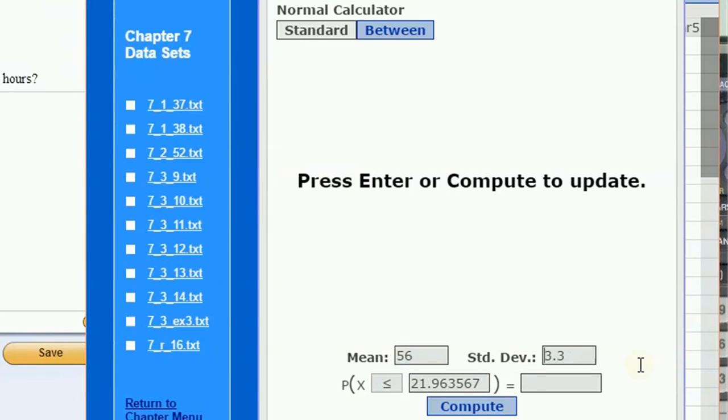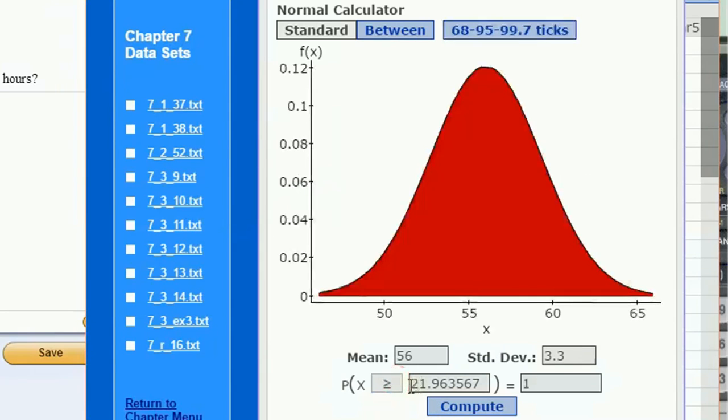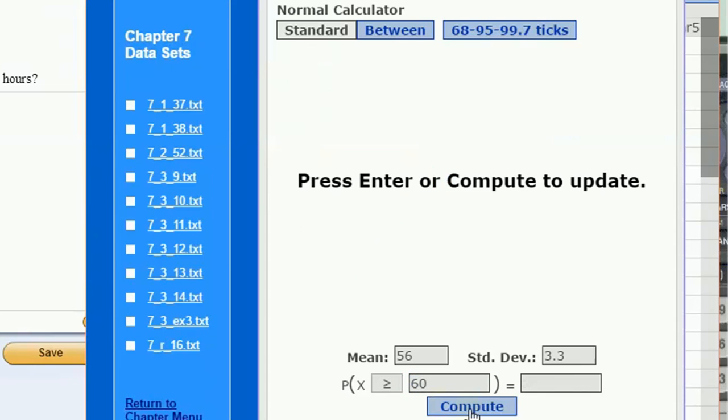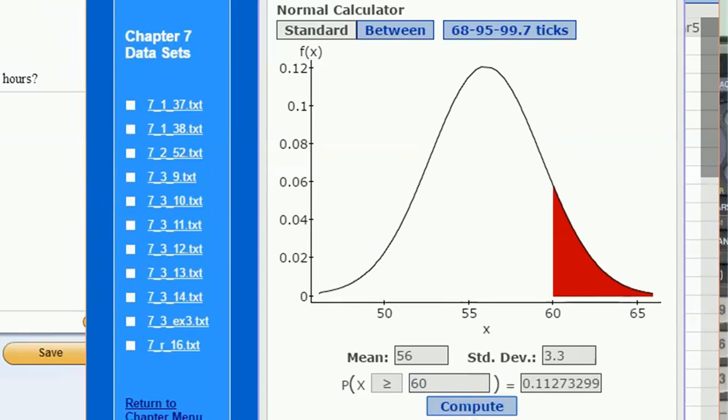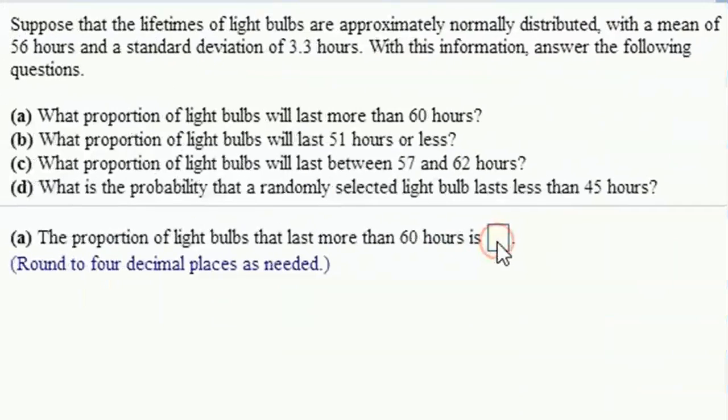What proportion of light bulbs will last more than 60? More than 60, click greater than and change this value to 60, hit compute, and you've got it. This is four decimal places, that's 0.1127.